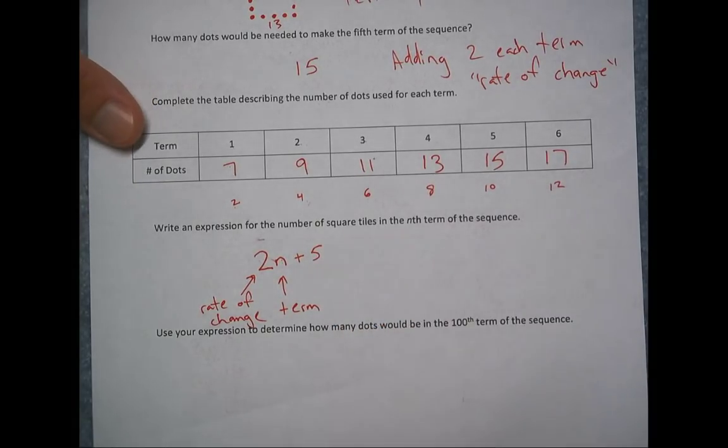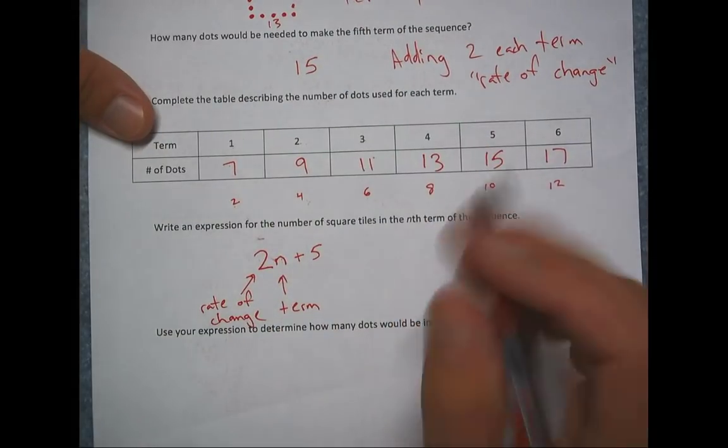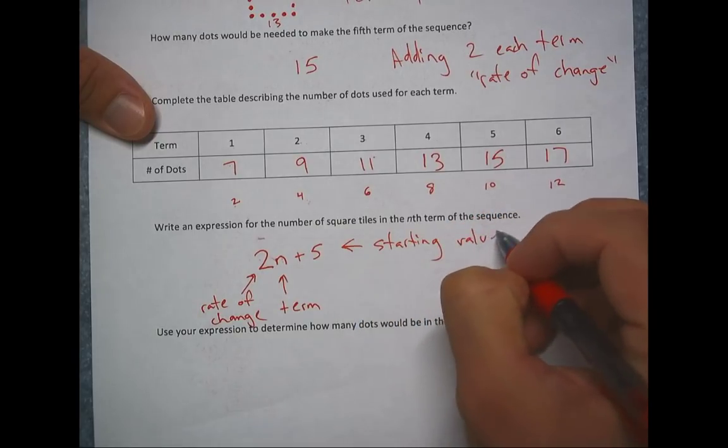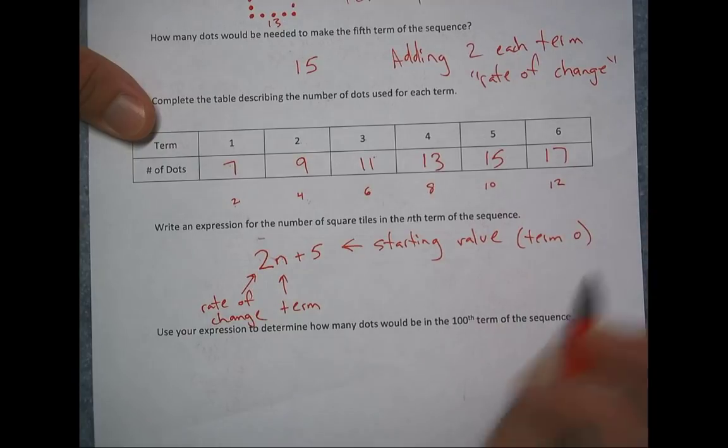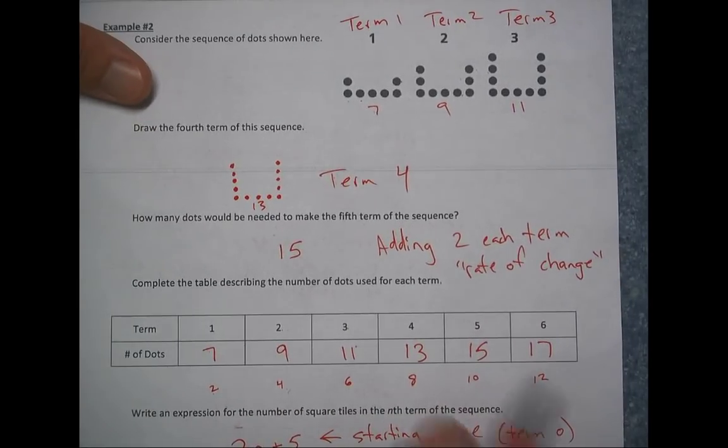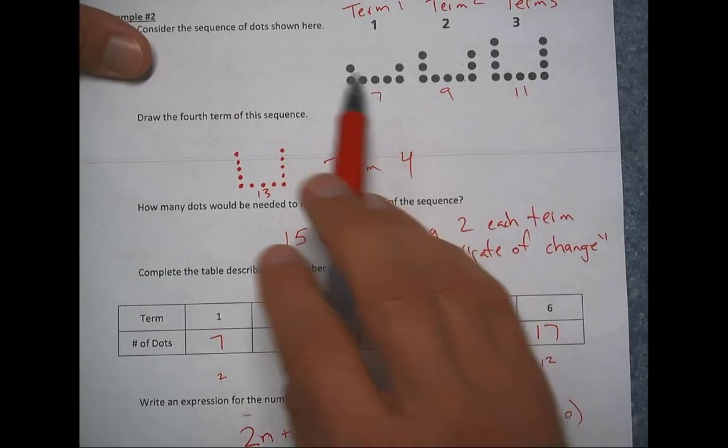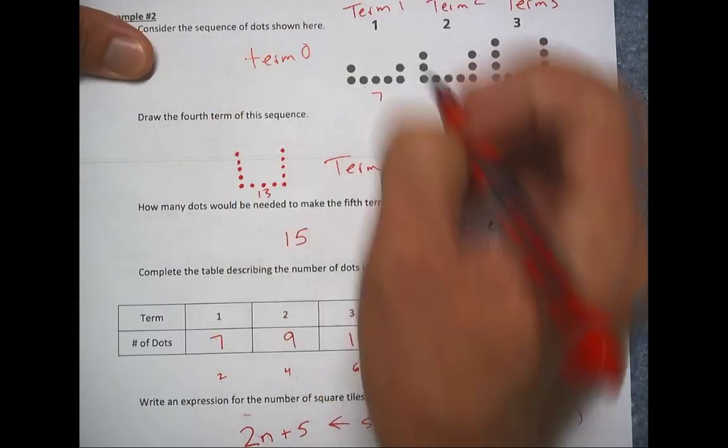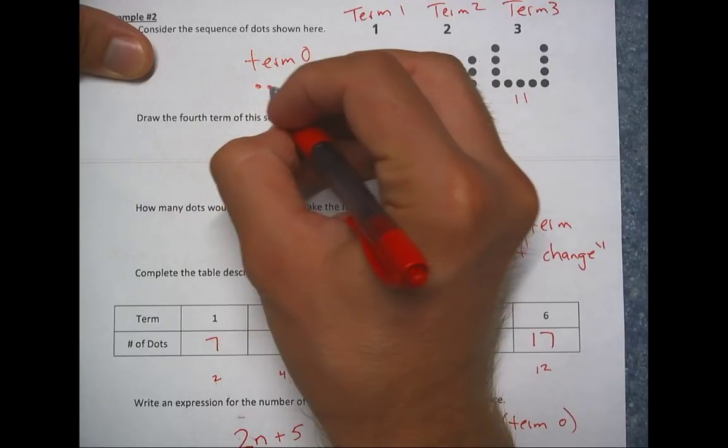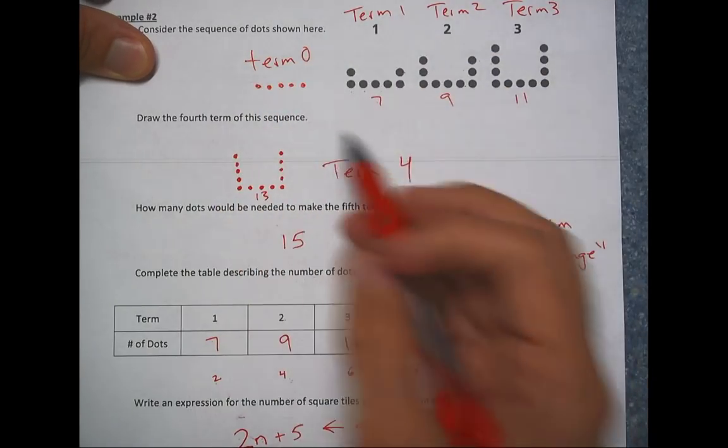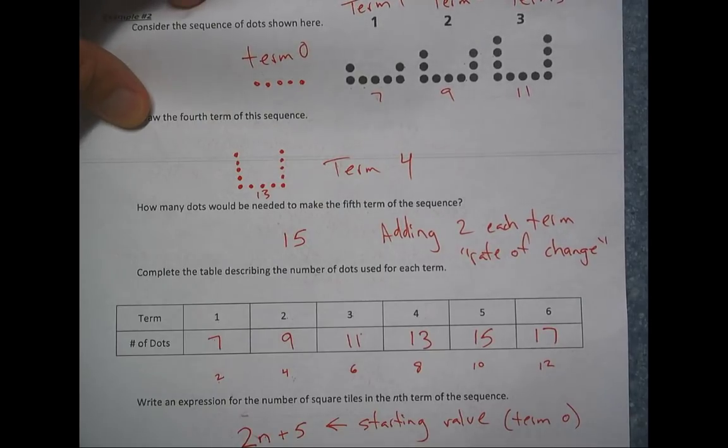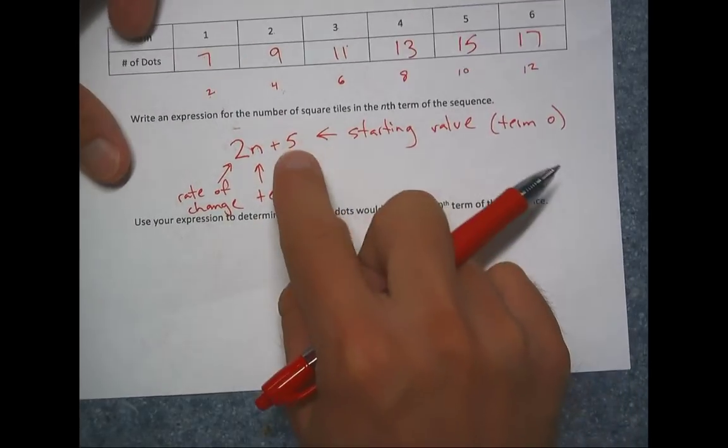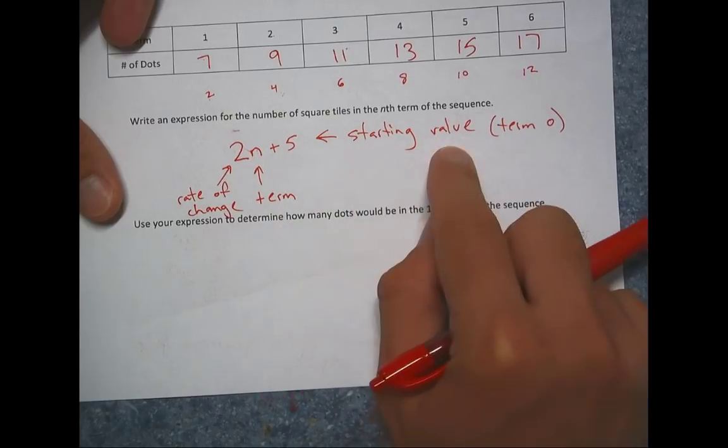This is kind of like your starting value. If there was a term zero, term zero, this is what it would be. If you go back to the picture and imagine this was term one. What if there was a term zero? So term one, I added this row. Term two, I added this row. So if there was a term zero, it would just be this bottom row. One, two, three, four, five. So in term zero, how many dots did I have? Five. That would have been my starting point. And then after term one, I added one row. Term two, I added two rows and so on. So this extra part right here, this expression, it's kind of like your starting value, like your term zero.